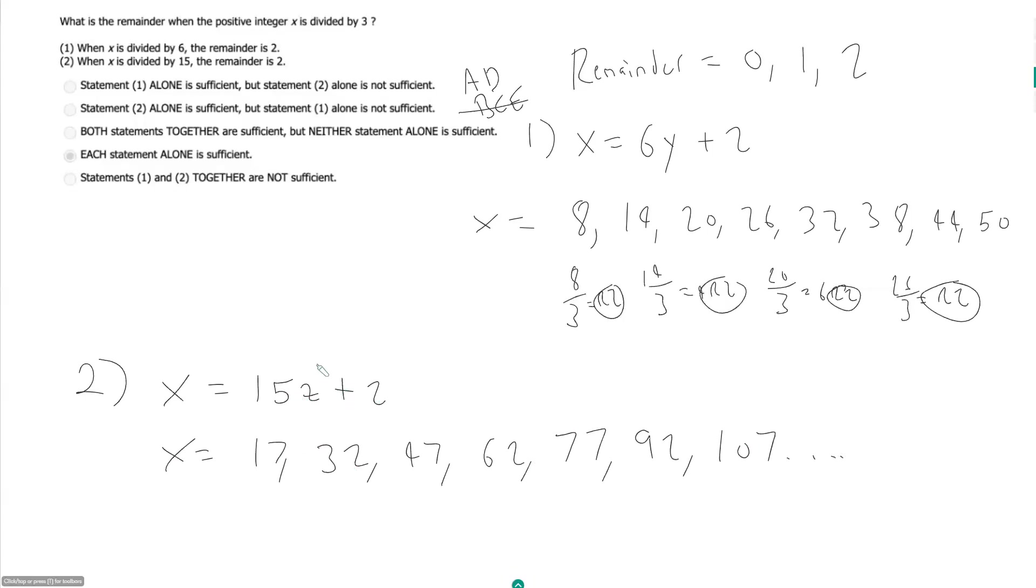So in this case, what is the remainder when x is divided by 3? So 17 over 3 is 5 remainder 2. 32 over 3 is 10 remainder 2. 47 divided by 3 is 15 remainder 2. So I'm thinking,